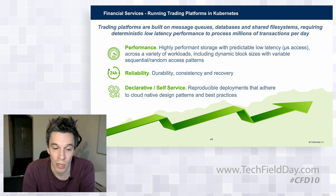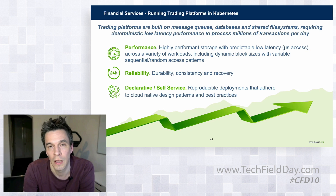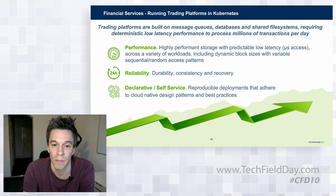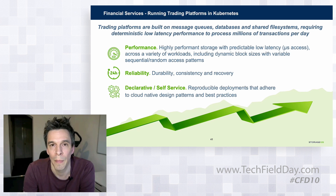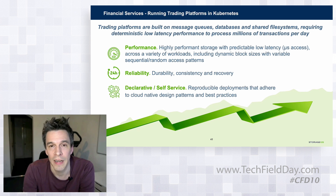Synchronous replication, as highlighted earlier by Paul and Farhan, provides that availability layer. Our control plane ensures that all of the data is available across all of the nodes and is accessible everywhere. Should there be a node or an availability failure within the environment, we still have an appropriate recovery point objective.